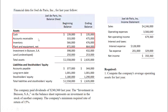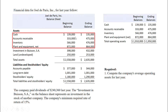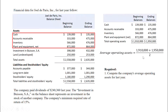So our focus is cash, accounts receivable, inventory, and plant and equipment. To get average operating assets, we first need to total up these assets for the beginning of the year and the end of the year on the balance sheet. Beginning of the year, totaling those four assets, is $1,910,000. End of the year is $1,950,000. To get an average, we add them together and divide by two: $1,910,000 plus $1,950,000 divided by two gives us average operating assets of $1,930,000. We'll need that for our ROI and residual income calculations.